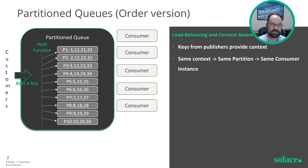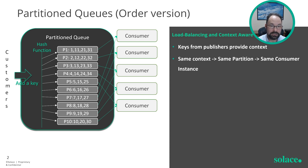Each partition maps to one and only one consumer application. The consumer application instances are identical. Partition queues take care of all the mapping, so now you can horizontally scale your application with many consumers.